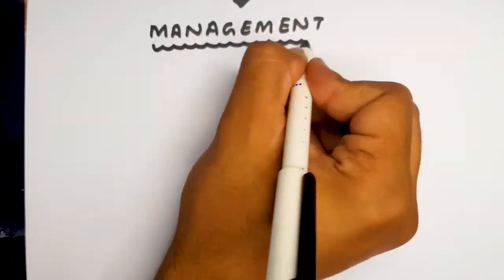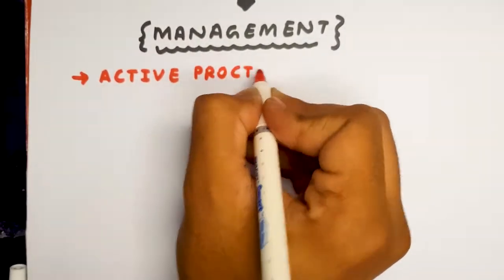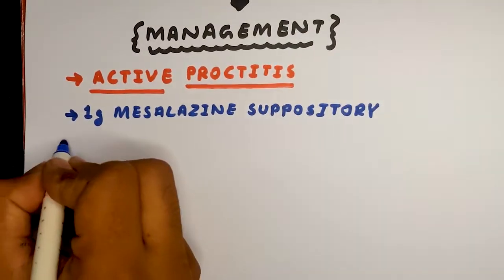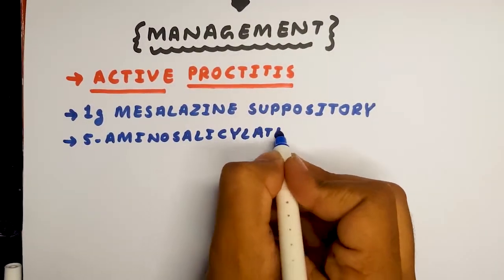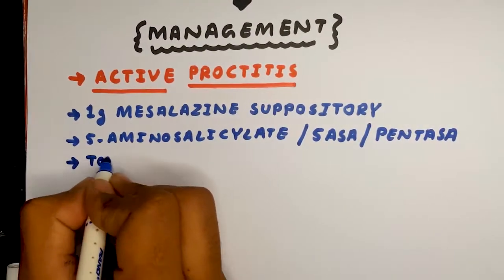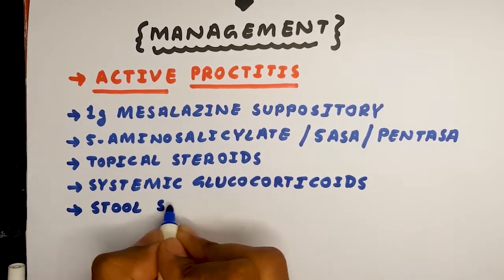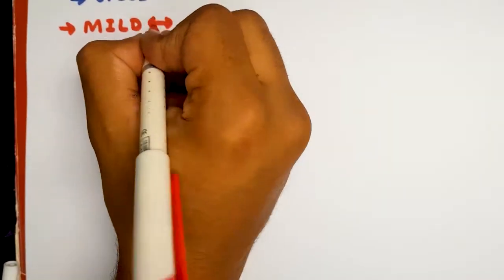We manage the patient based on the severity of the disease. In cases of active proctitis, we give 1 gram mesalazine suppositories, 5-aminosalicylates or Pentasa, topical steroids, systemic glucocorticoids, and stool softeners.